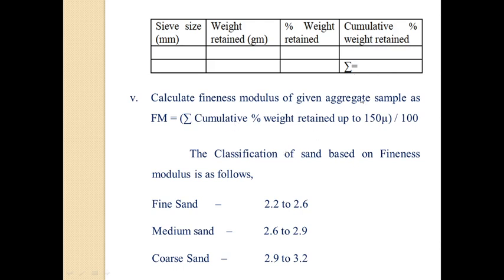Sand is classified on the basis of fineness modulus as follows: if fineness modulus is between 2.2 to 2.6, it is fine sand; if between 2.6 to 2.9, it is medium sand; and if between 2.9 to 3.2, it is coarse sand.